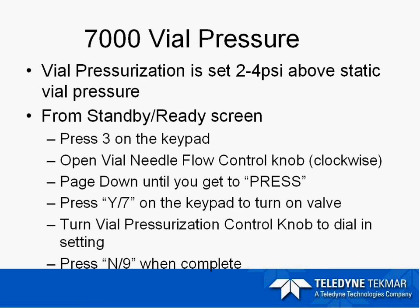Once you have the static vial pressure, you are going to want to set the vial pressurization. This vial pressurization is generally set 2 to 4 PSI above our static vial pressure. From the standby ready screen, we are going to press 3 on the keypad, and now open the vial needle flow controller all the way, which is clockwise. You are going to press the page down key until you get to the pressurized setting. Turning the pressurized valve on, you can then dial in the vial pressurization that you would like with the control knob.